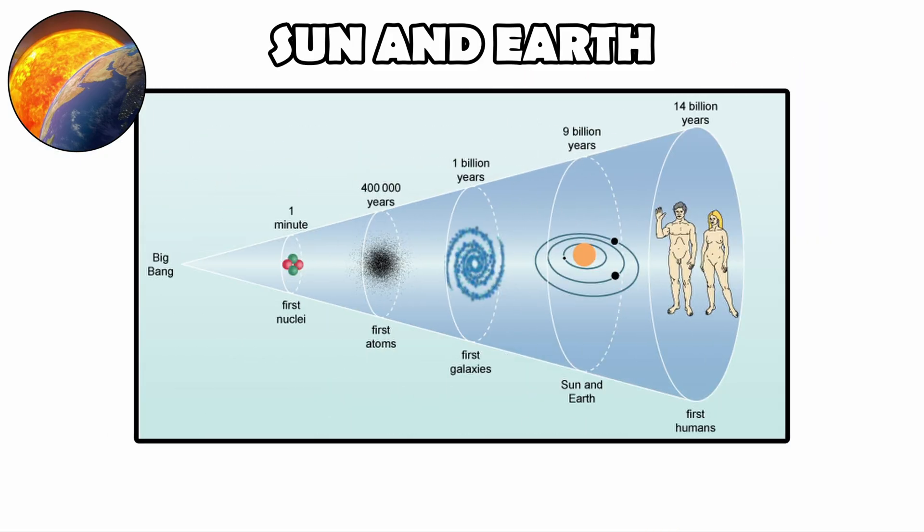So the Sun and Earth are latecomers in the cosmic timeline, products of a long chain of star birth and death that began billions of years after the Big Bang.